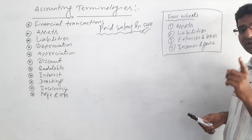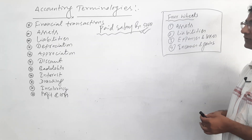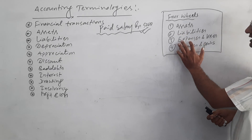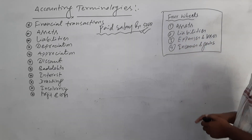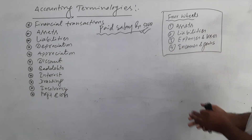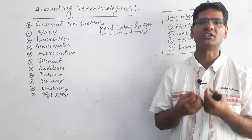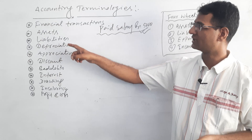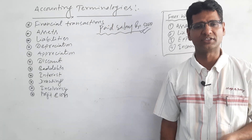There are four major wheels of accounting: assets, liabilities, expenses and losses, and income and expenses. The detailed description of these four wheels is known as accounting terminologies.